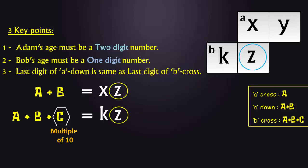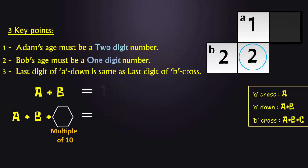For example, if Adam's age plus Bob's age is 12, and if Karl's age is 10, then B cross can have a value of 22.